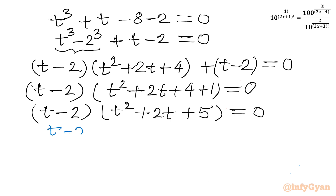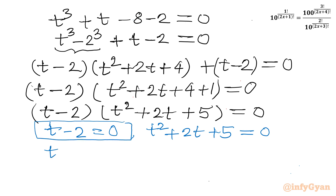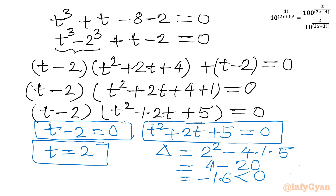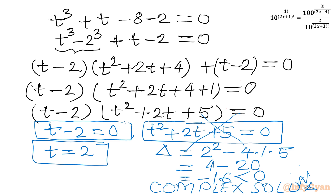From the first factor, t - 2 = 0 gives t = 2, which satisfies our condition t ≥ 2. For the second factor, t² + 2t + 5 = 0, we check the discriminant: b²- 4ac = 4 - 20 = -16, which is negative. This generates complex solutions, so we reject this equation. Therefore the only accepted solution is t = 2.